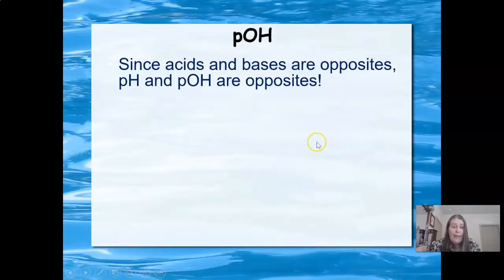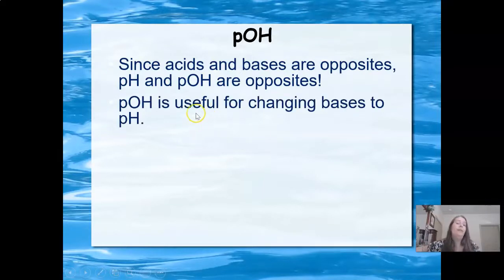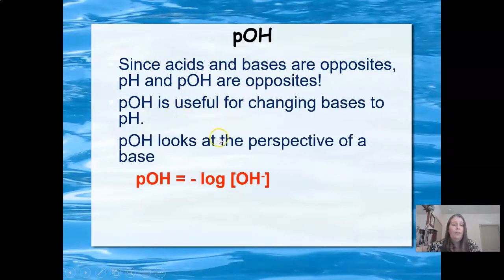So pOH is essentially the opposite side of the coin. Since acids and bases are opposite, pH and pOH are opposites. pOH is really useful. If I have a base, I can look at the OH- concentration and use that to maneuver to the pH. P anything, including pOH, is just the negative log of that quantity. So this is the negative log of the molarity of OH-. So it looks just like the pH formula, only we're looking at a base. So we're looking at OH-.